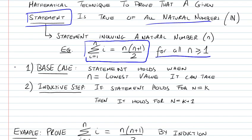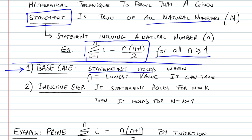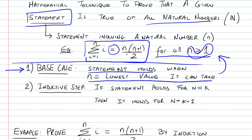Mathematical induction consists of two cases. The first is the base case — we're dividing the problem into two sub-problems. The first sub-problem is to prove that the statement holds when n assumes the lowest value it can take. In our problem here, we're going to let n take the value 1, which is the lowest value, and prove that this equality holds. If we can do that, we've passed the first step.